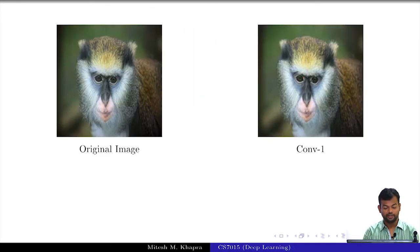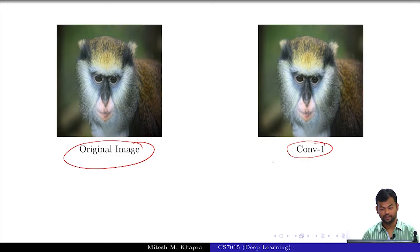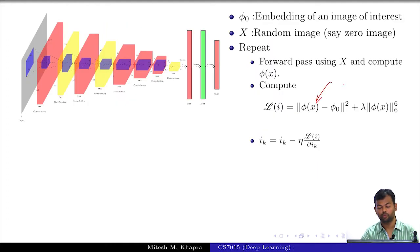Now what I am trying to do is this is my original image and I have the convolution 1 embedding of it. In this I am using convolution 1 as the embedding and then I am trying to solve this optimization problem to recreate X such that it is very close to the original image.